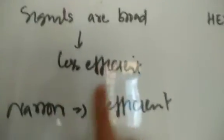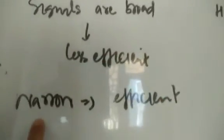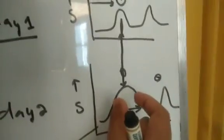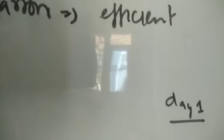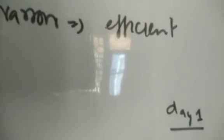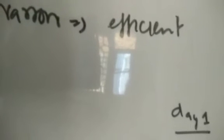If our signals in the chromatogram are broad, that means the column is less efficient. And if our signals are narrow, that means our column is efficient for separation. The efficiency of the column is defined by the number of theoretical plates — more theoretical plates means HETP is less, so the column is highly efficient.